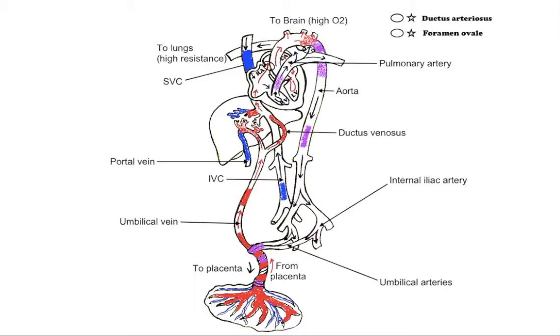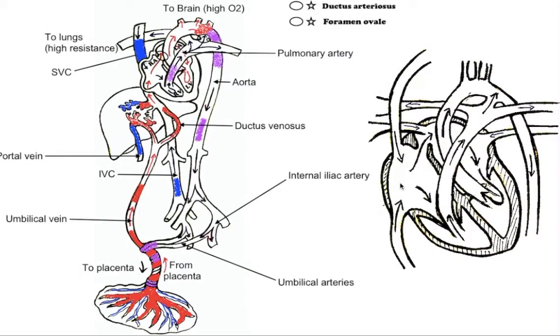The blood then moves to the right atrium of the heart. In the fetus, there is an opening between the right and left atrium, the foramen ovale, and most of the blood flows through this hole directly into the left atrium from the right atrium, thus bypassing pulmonary circulation.